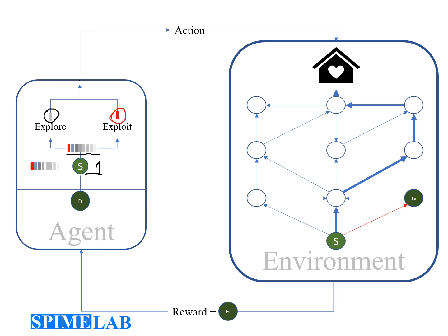The action will be received by the environment, and the environment will return a reward for the selected action and the future state. The agent receives the reward, moves to the future state by making it its current state, and updates the quality of the selected action that moved the agent from S to FS. This update is based on the reward and the quality of actions possible in the future state.